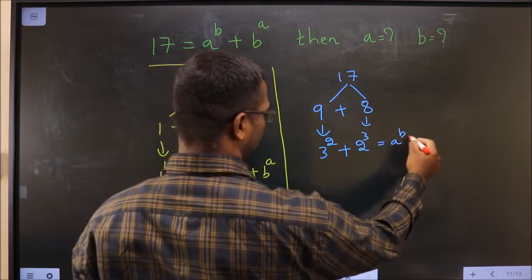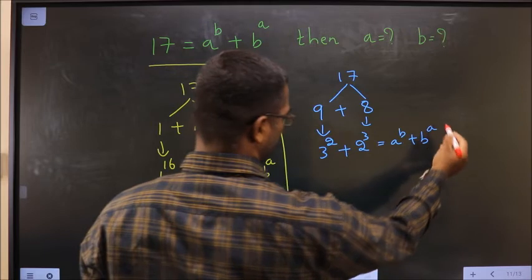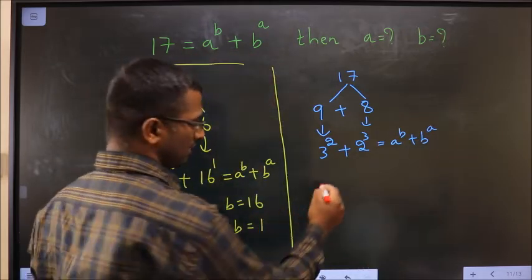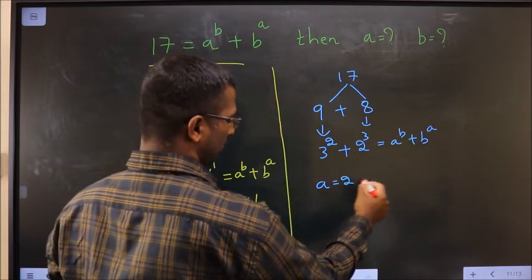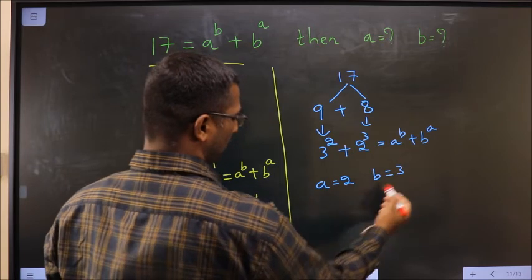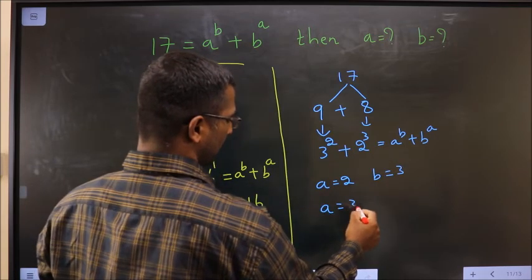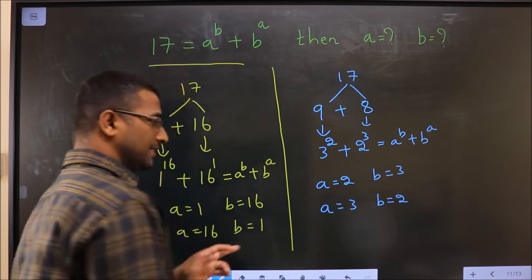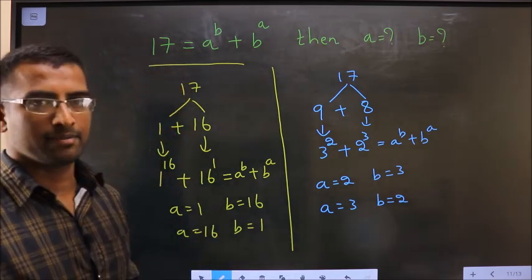Now, this is of the form a^b plus b^a. So, a is 2, b is 3, or a is 3, b is 2. These are the values of a and b.